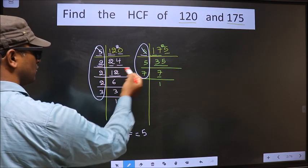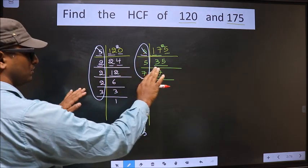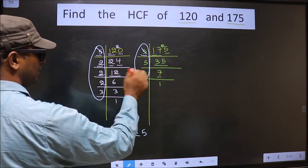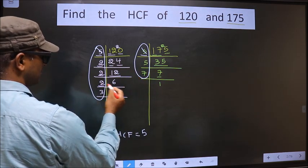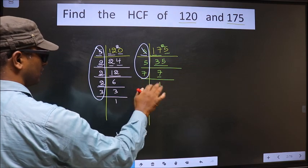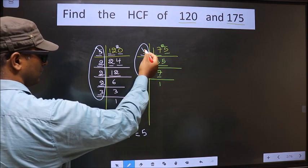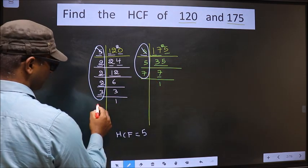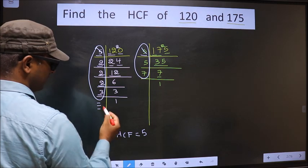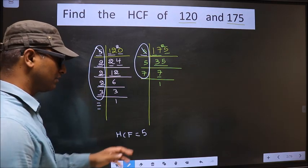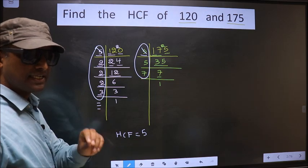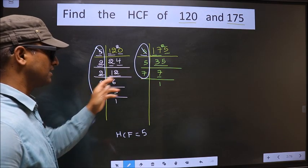Next number is 2. Do we have 3 here? No. No more numbers are left. So we have only one number, 5, present in these 2 places.